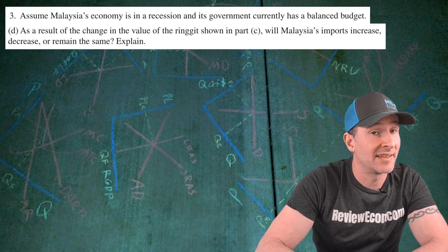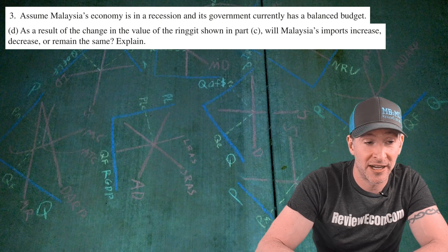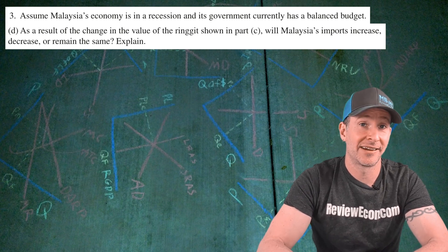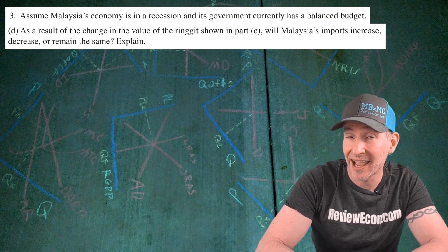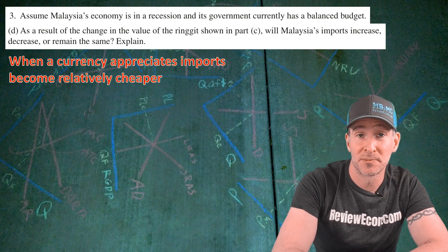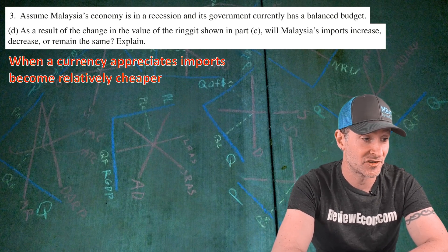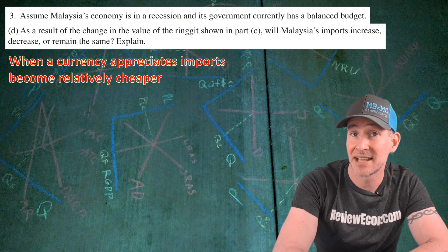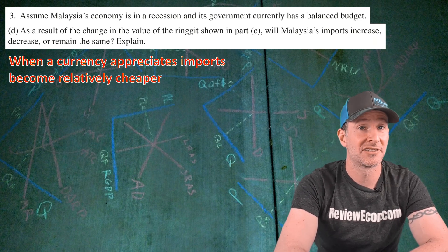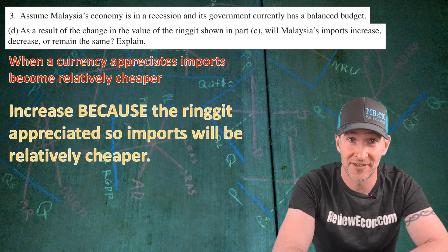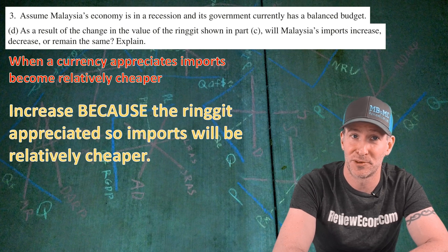For part D, we are asked to explain the impact of the appreciation of the ringgit on the imports of Malaysia. Will they increase, decrease, or stay the same? In order to answer this question, it's helpful to remember that when a currency appreciates, imports from other countries will be relatively cheaper, because it will take fewer ringgit to buy the same number of Japanese yen. So the answer is increase — because the ringgit appreciated, imports will be relatively cheaper. If you have an answer something like that, you get your final point.